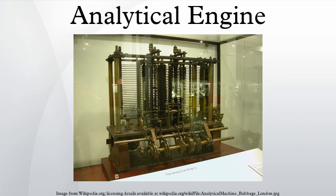Late in his life, Babbage sought ways to build a simplified version of the machine, and assembled a small part of it before his death in 1871. In 1878, a committee of the British Association for the Advancement of Science recommended against constructing the analytical engine. In 1910, Babbage's son Henry Prevost Babbage reported that a part of the mill and the printing apparatus had been constructed and had been used to calculate a list of multiples of pi. This constituted only a small part of the whole engine. It was not programmable and had no storage.